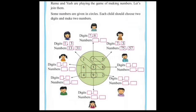Rama and Yash are playing the game of making numbers. Let's join them. Some numbers are given in circles. Each child should choose two digits and make two numbers. Two students had already chosen the numbers. The first girl has chosen the numbers 1 and 3 and from that she made the numbers 13 and 31. And the third girl has chosen the numbers 7 and 5. From that she made the numbers 75 and 57.